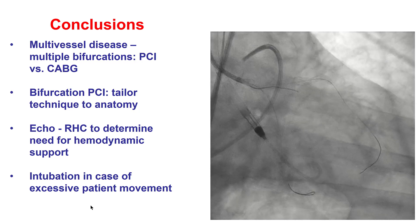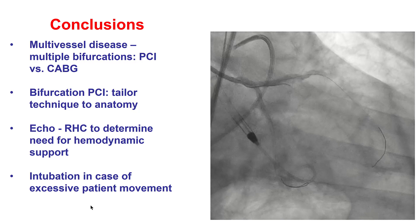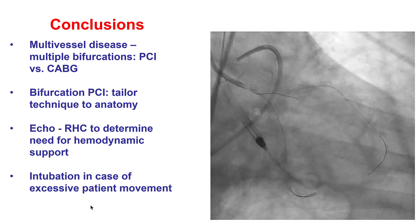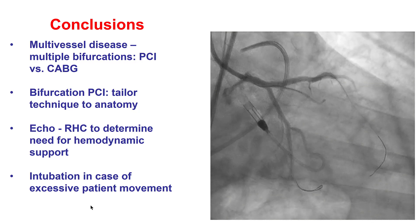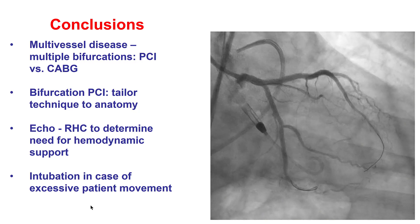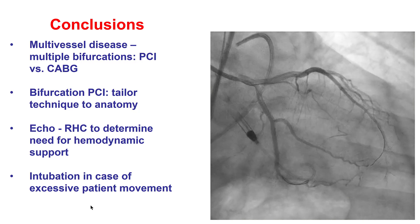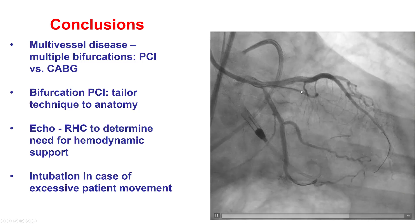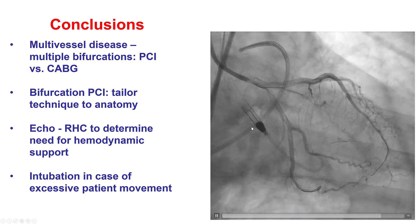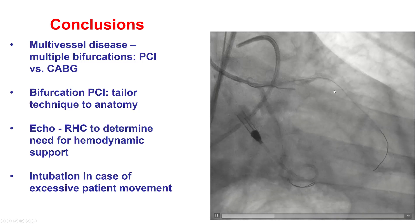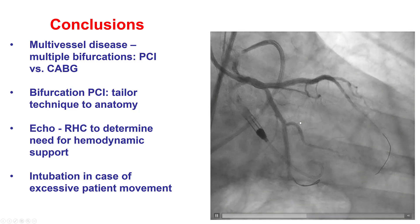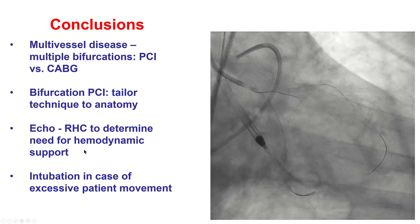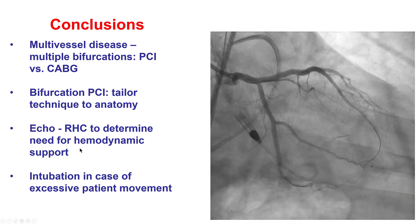In summary, this is a patient with multi-vessel disease and multiple bifurcations. The first question is coronary bypass versus PCI; in this case, due to the patient's age and ongoing chest discomfort, bypass was not pursued and PCI was performed instead. Determining the culprit lesion and extent of revascularization can be challenging — here all three lesions (LAD-diagonal, circumflex, and left main) appeared important, so multi-vessel PCI treating all three bifurcations was performed. Two-stent techniques were used: DK Crush for the LAD-diagonal and left main, and provisional stenting for the circumflex-obtuse marginal. ECHO and right heart catheterization guided the use of hemodynamic support. The patient did well and had the Impella device removed at the end of the procedure. Thank you very much.